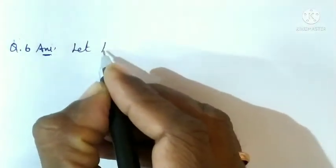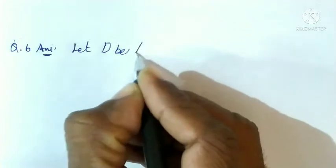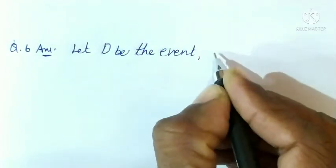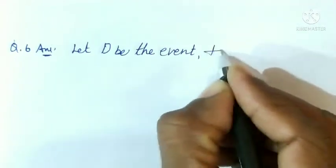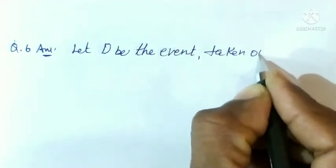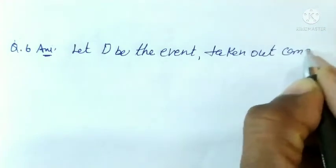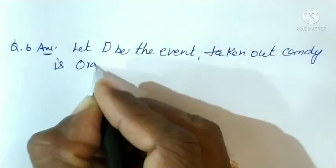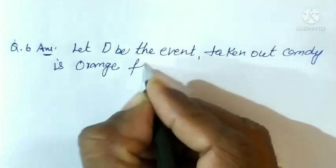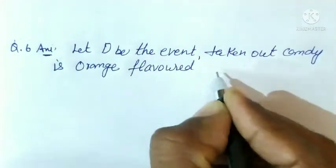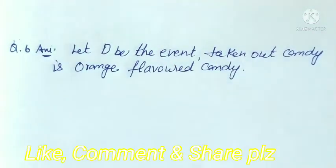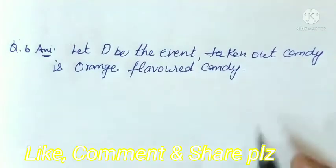Let's copy the event. Let O be the event that the taken out candy is orange flavored. जो हमने मान लिया कि O हमारा event है कि जो हमने candy निकाली है वो orange flavored candy है।